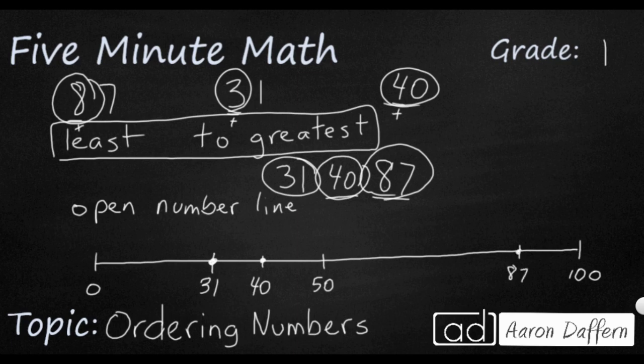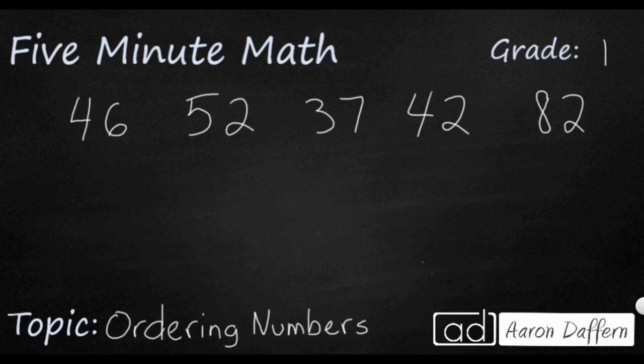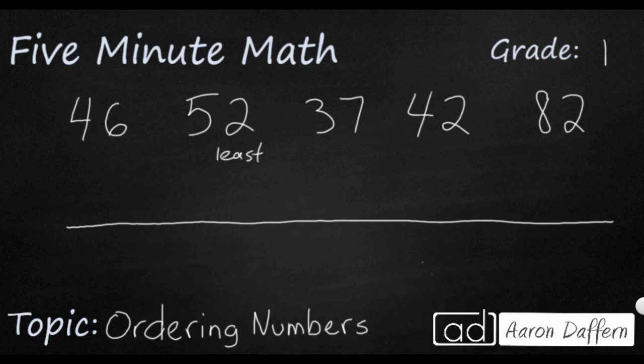So that's how you can place a few numbers on an open number line. Let's look at another example. Now we have five new numbers here, and we're going to put them in order. Once again, we're going to go least to greatest, and we're going to put it straight onto an open number line.